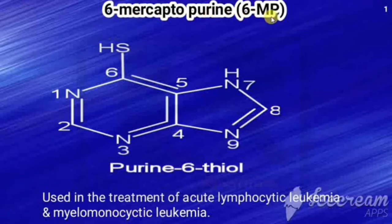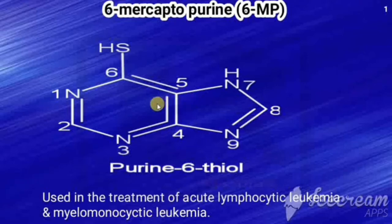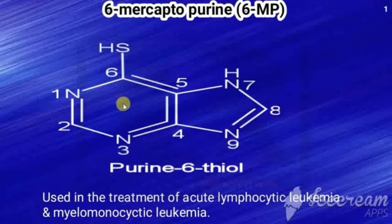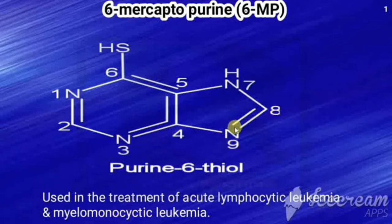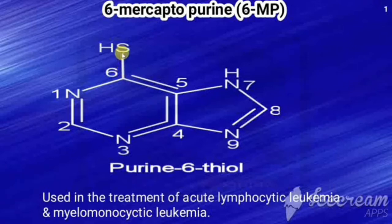6-Mercaptopurine, otherwise called 6-MP. From the name itself we can say it has a purine nucleus with a mercapto group attached at the sixth position. Purine is the fusion of two heterocyclic rings: a pyrimidine ring (six-membered with two nitrogens at positions 1 and 3) and an imidazole ring (five-membered with two nitrogens at positions 1 and 3). In the sixth position it has a thiol group, so it is called purine-6-thiol.